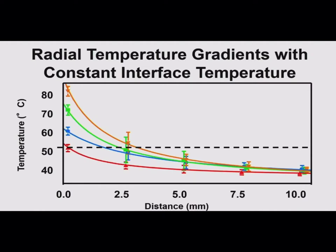Looking at how ablation started: for non-irrigated ablation, the temperature measured at the electrode-tissue interface is proportional to the size of the lesion you're going to get. So measuring temperature from the electrode is very important for estimating lesion size. If you heat the tissue interface up to 80 degrees, that will fall off with conductive heating over distance, and you may end up with something like a 2.6 centimeter lesion. If you only heat to 60 degrees, that falls off to the 50-degree irreversible injury mark and you'll get a smaller lesion. So for non-irrigated ablation, the temperature you're heating the electrode to is actually very useful to gauge the ablation size.